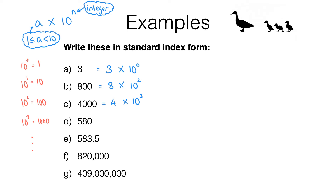Let's have a look at 580. This number is not between 1 and 10. I need to find where I can put the decimal point to make this a number between 1 and 10, and the only place it would go is between the 5 and the 8. So I'm going to write this as 5.8 multiplied by what exactly? Well, the 5 is currently in the units column and needs to get to the hundreds column — that's two place value columns to the left — so we need to multiply by 10 to the power of 2.